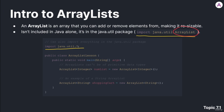Let's look at this sample class, which contains a main method, and see how we can create an ArrayList. We use the word ArrayList, and inside a less-than and greater-than sign, we include the type.